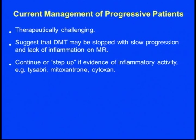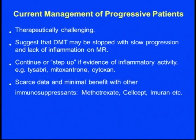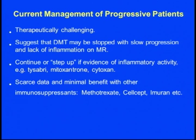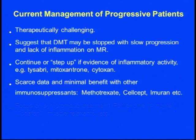Cyclophosphamide and natalizumab have their own potential problems and only moderate efficacy for progression. There is also minimal benefit from other immunosuppressants like methotrexate. So there is really a critical need for developing more effective treatment in secondary progressive MS.